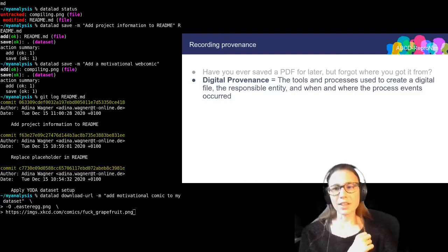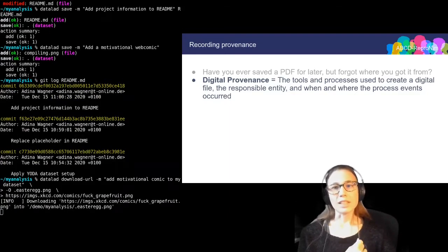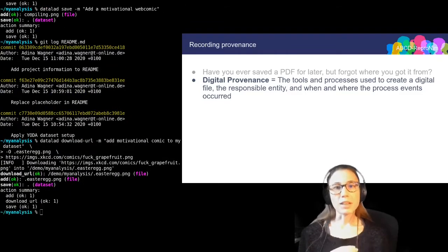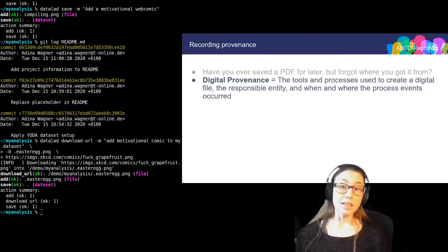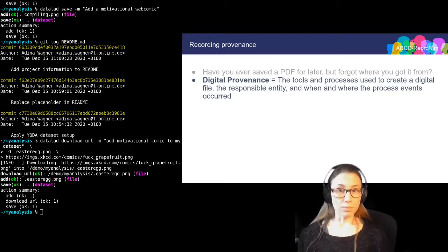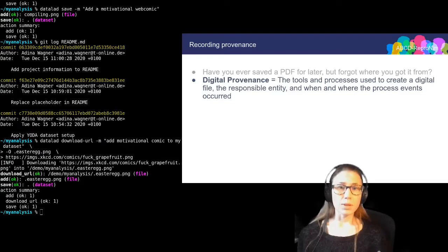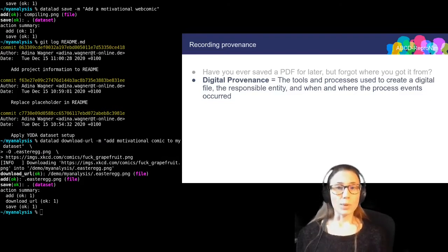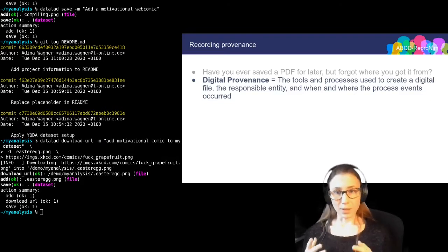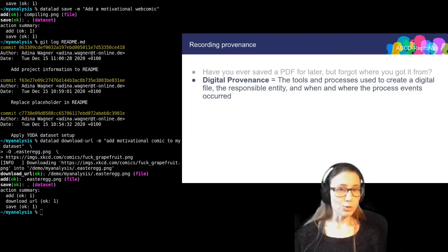If I execute this command, then DataLad will download the file from the URL, save it under the file name and with the provided commit message, and importantly register the origin of this file in the background. This is helpful in many ways. At the moment it is convenient because it spares me a datalad save. But later I will use the provenance that has been registered in the background to demonstrate a very important principle of DataLad.